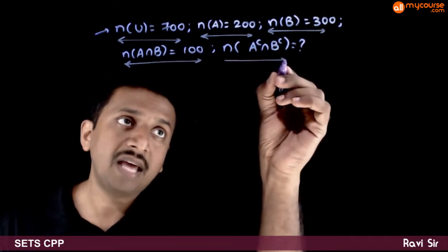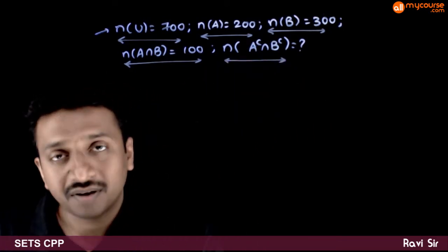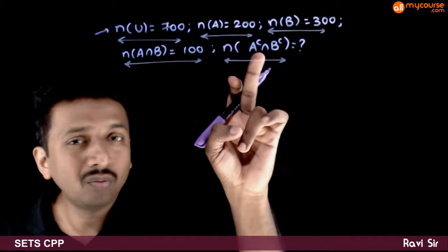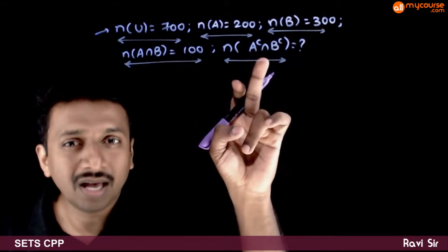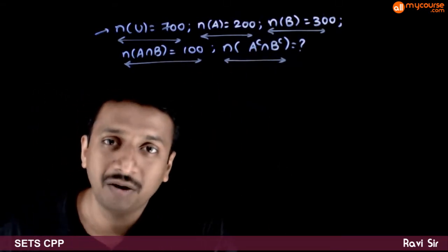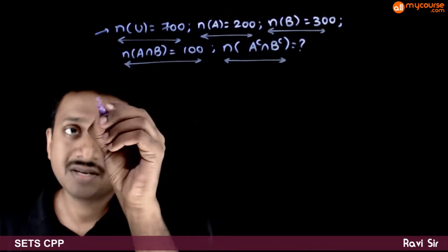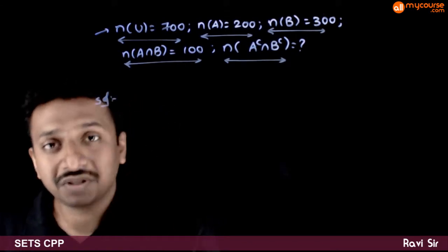Now you are asked to find n of A complement intersection B complement. Do you remember any formula looking at A complement intersection B complement? Yes.